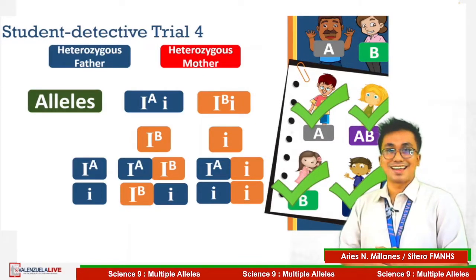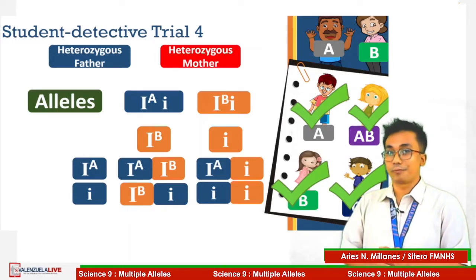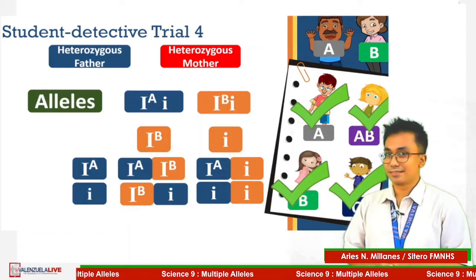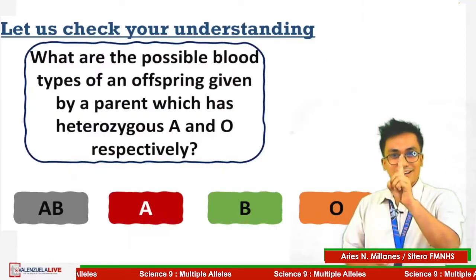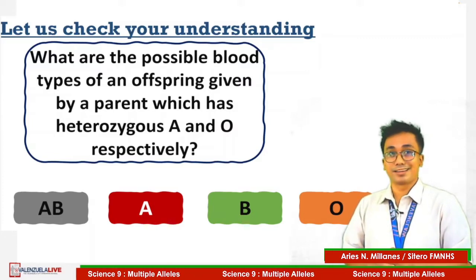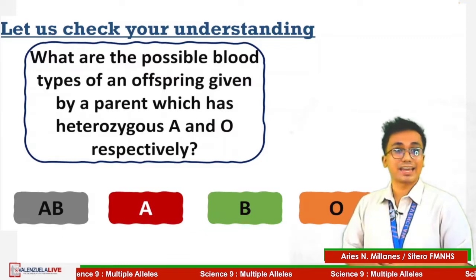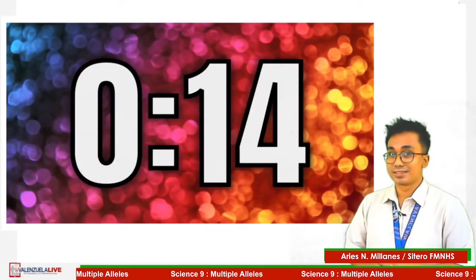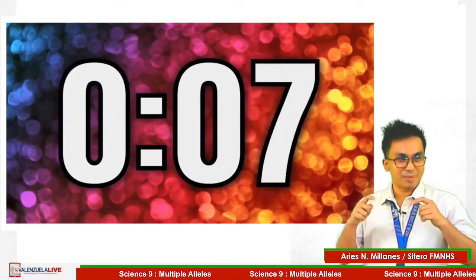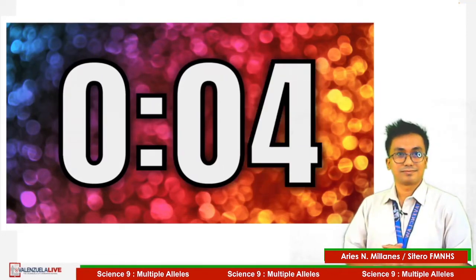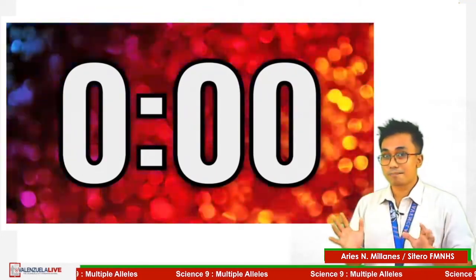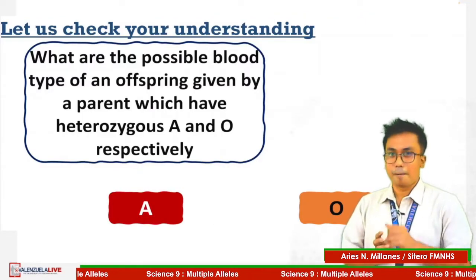Let us try if you understand the lesson by answering the following. You have 15 seconds to type in the comment section. Question 1: what are the possible blood types of an offspring given by a parent which has heterozygous A and O, respectively? If you answered A and O, very good.